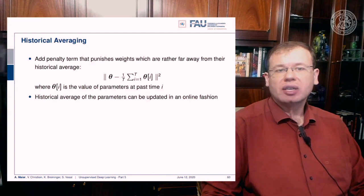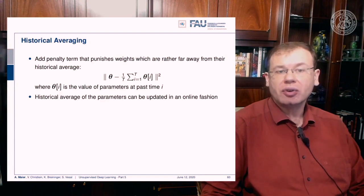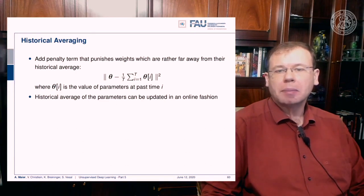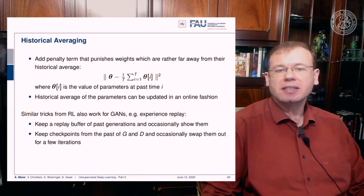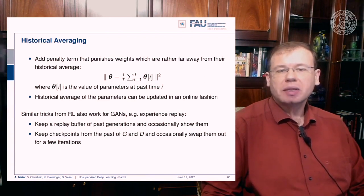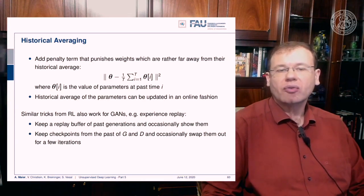There is also the idea of historical averaging, where you add a penalty term that punishes weights far from the historical average, and this historical average can be updated online. Similar tricks from reinforcement learning can also work for GANs — like experience replay, where you keep a replay buffer of past generations and occasionally show them, and keep checkpoints from past generators and discriminators to occasionally swap in for a few iterations.